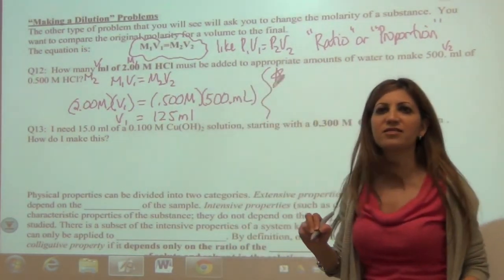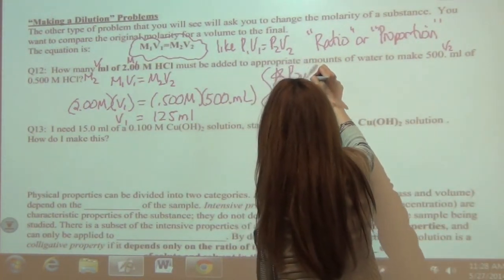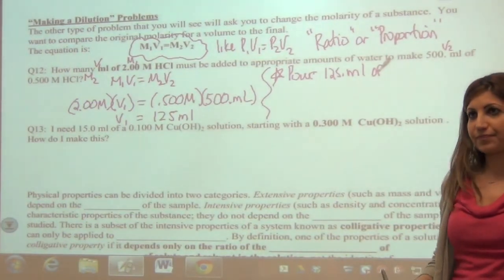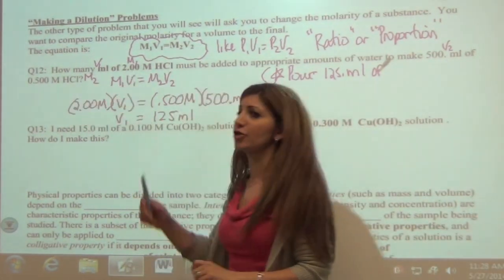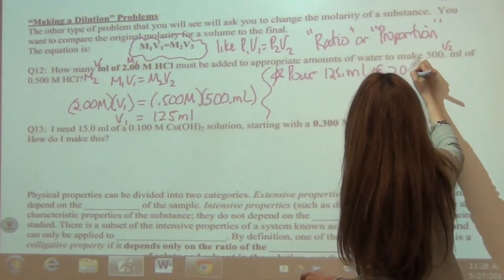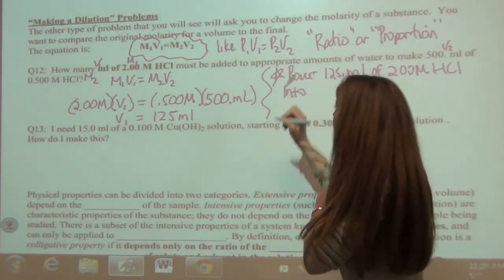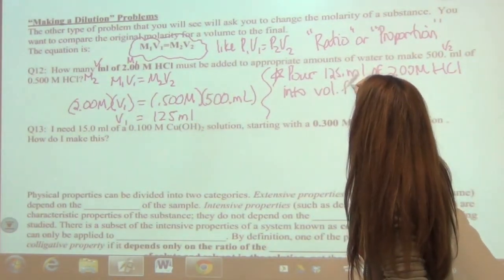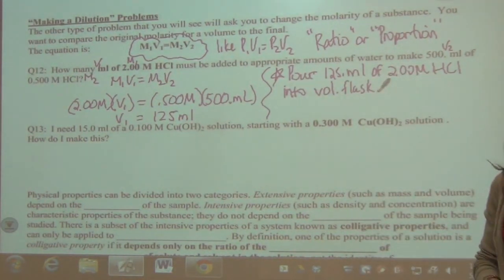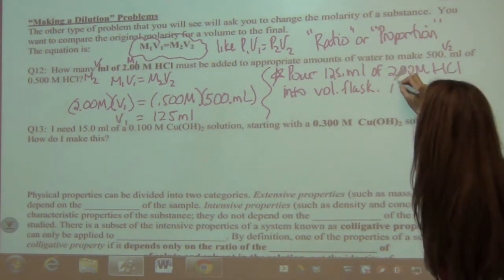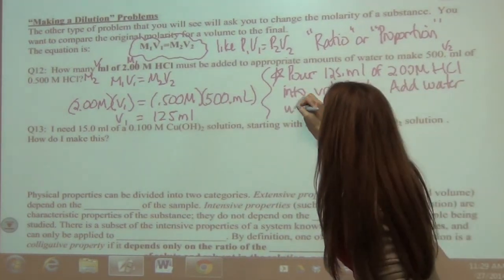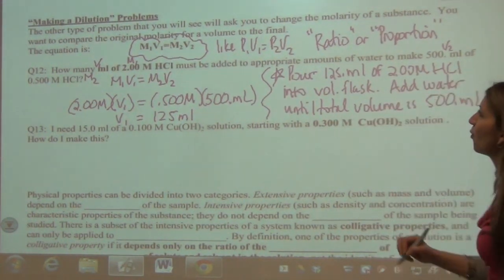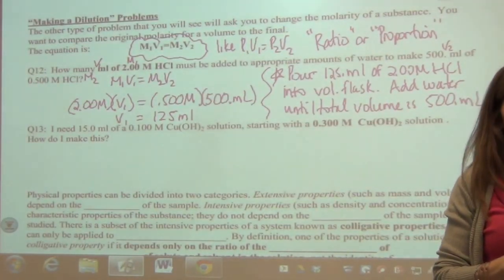So our dilution statement: pour 125 mL of the 2 molar HCl into a volumetric flask, then add water until the total volume is 500 mL. That's how you make a dilution. It's a two-part problem — you need the calculation and then you need to know how to make it.